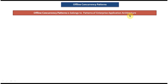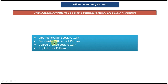There are four patterns which come under offline concurrency patterns. The first one is Optimistic Offline Lock pattern, the second is Pessimistic Offline Lock pattern, the third is Coarse Grain Lock pattern, and the fourth and final one is Implicit Lock pattern.